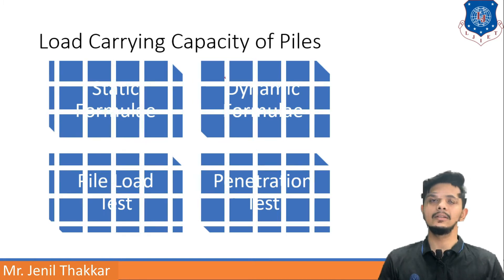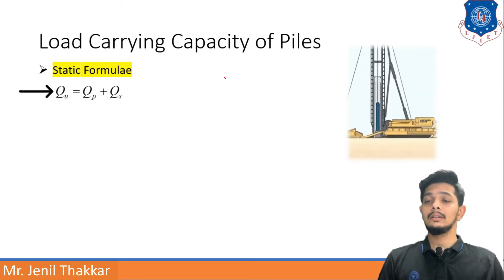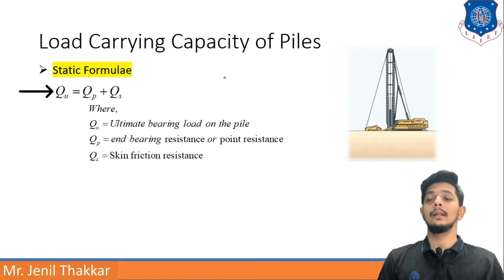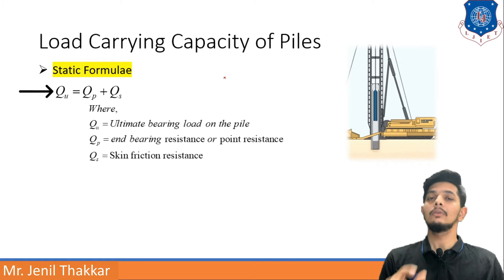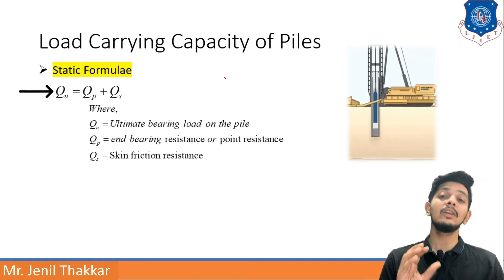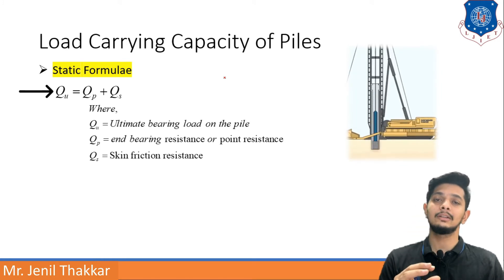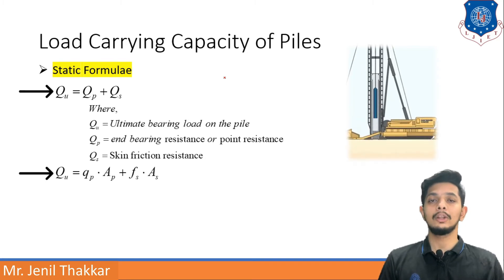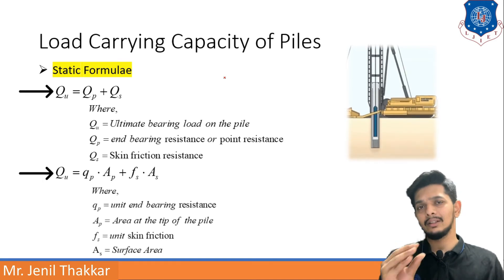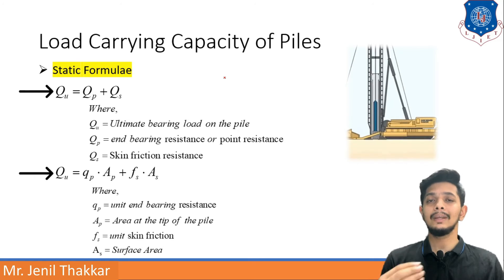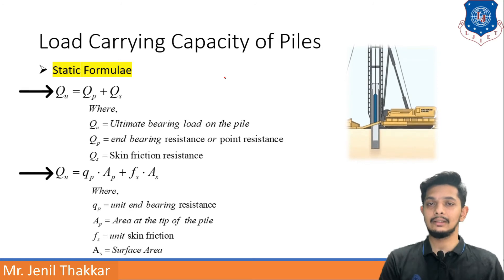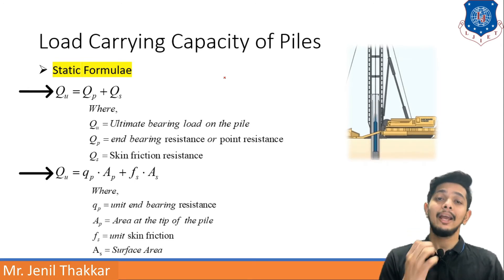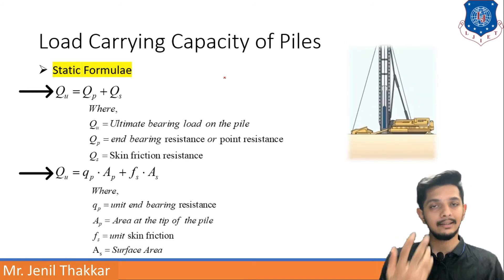Let us understand the static formula. The equation is: Qu = Qp + Qs, where Qu is the ultimate bearing load on the pile, Qp is the end bearing or point resistance, and Qs is the skin friction resistance. So skin friction resistance plus point resistance gives the total ultimate load on the pile. This can also be written as Qu = qp × Ap + fs × As, where qp is unit end bearing resistance, Ap is area at the tip of the pile, fs is unit skin friction, and As is the surface area where skin friction acts.